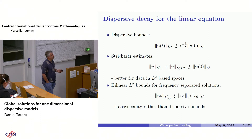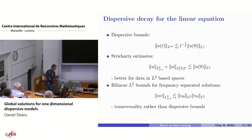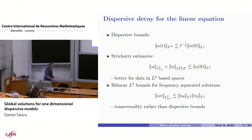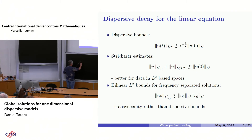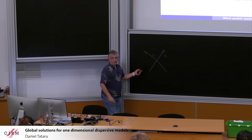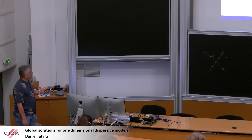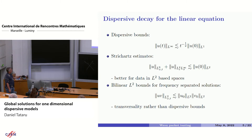A third class of estimates, which maybe people haven't been using very much in connection with fluids, is a bilinear L2 estimate where you take two solutions to the linear equation with the peculiar property that they are separated in frequency — the supports of the initial data for U and V are disjoint sets. The picture is that the U waves travel in one direction and the V waves in another, so we're looking at transversal interaction of waves. This orthogonality allows you to have this bilinear L2 estimate. The Strichartz estimates are related to curvature of the dispersion relation, while these bilinear L2 bounds are related to transversality.